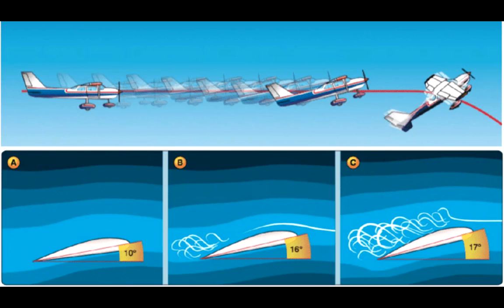So at some point, as dissymmetry of lift grows and grows, and we try to compensate more and more for it, we're increasing the angle of attack on that retreating side blade, and it's going to exceed its critical angle and stall. That is known as a retreating blade stall.